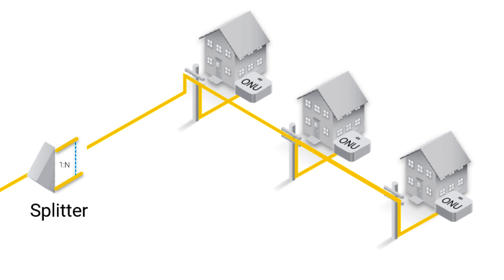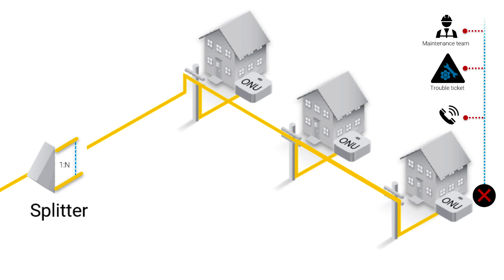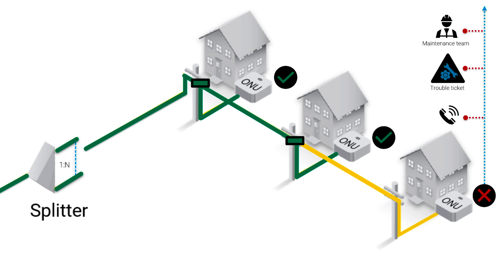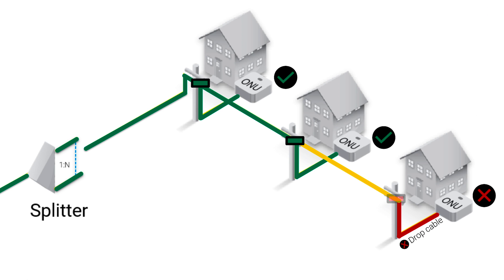A technician has been called out to service a PON customer that is losing services at an individual address. None of the other customers fed from the same FDH are experiencing any issues. The technician can theorize that if no light is present at the ONU, he may have an issue with a drop cable, tap, or feeder cable after the previous tap.